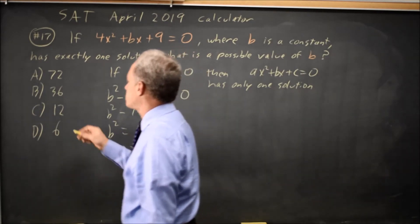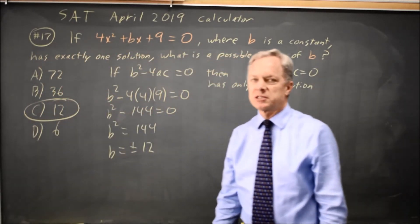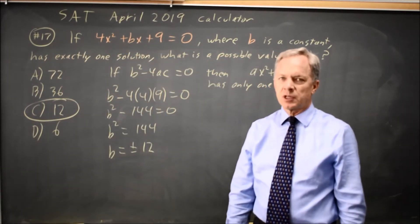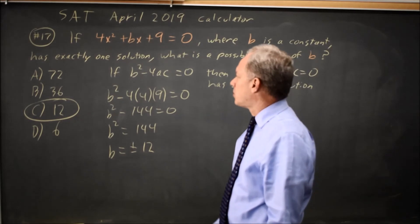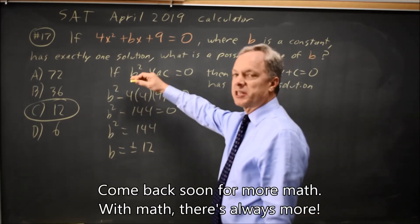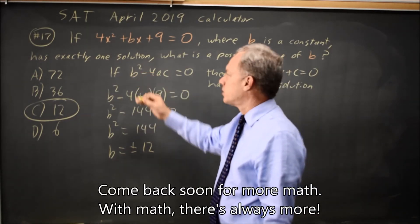The answer choice they gave us was positive 12, so that would be our answer. Alternatively, we could use the whole quadratic formula, but that again comes down to the b squared minus 4ac term.